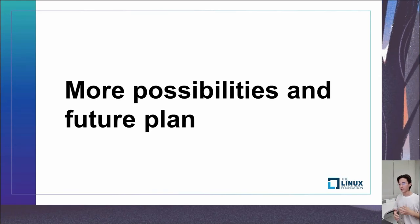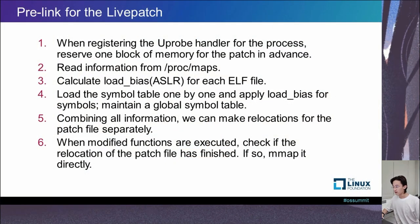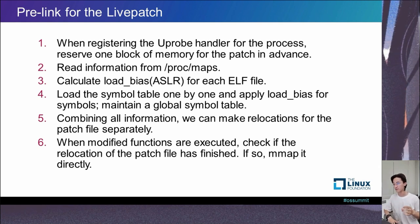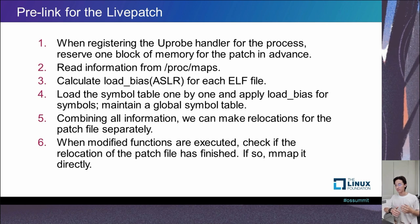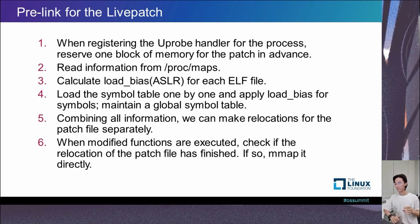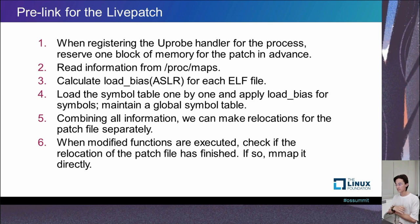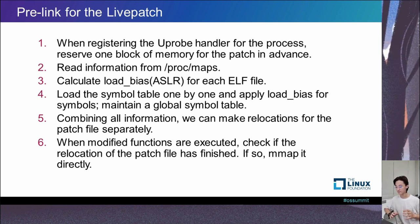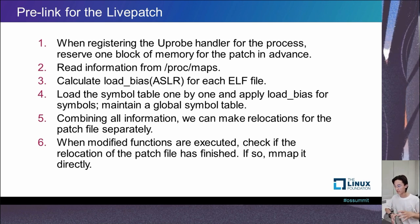Some immature ideas are not included here. One is pre-linking for the live patch: if the patch is big, relocation could cost a lot of time, so we can do the relocation in advance. Due to address space layout randomization, we need to decide the memory location of the patch — by reserving memory when registering the handler — and decide the load bias for all ELF files by scanning the maps file in the proc filesystem. Combined with the symbol table from ELF files, we can do relocations separately and add-map the patch directly when needed.